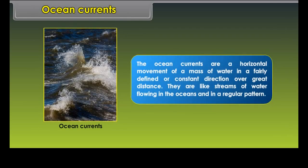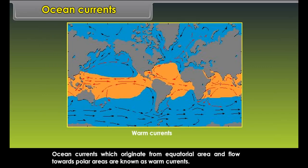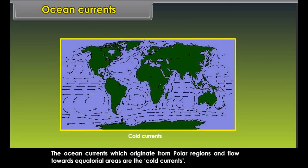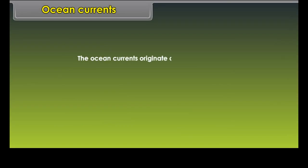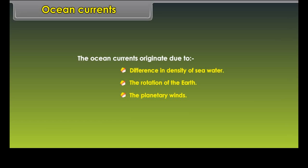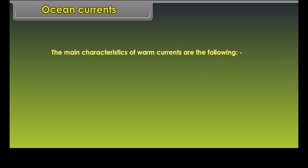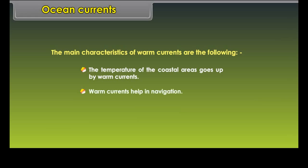Ocean currents are a horizontal movement of a mass of water in a fairly defined or constant direction over great distances. They are like streams of water flowing in the oceans in a regular pattern. Ocean currents that originate from the equatorial area and flow towards polar areas are known as warm currents. Those that originate from polar regions and flow towards equatorial areas are the cold currents. Ocean currents originate due to differences in density of seawater, the rotation of the Earth, and the planetary winds. Warm currents raise the temperature of coastal areas, help in navigation, and keep ports — even in polar regions — free from ice.